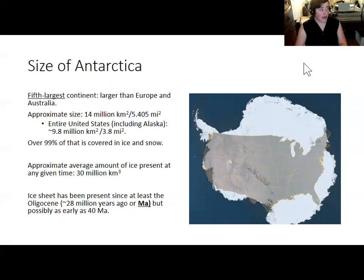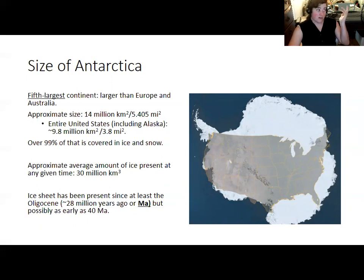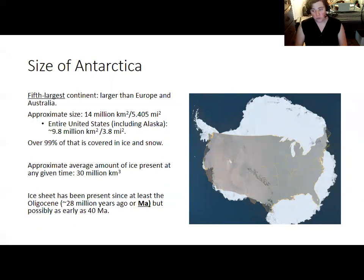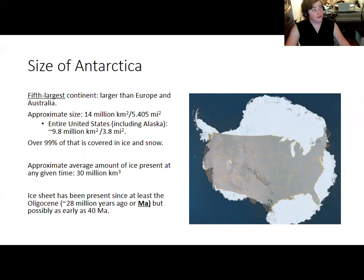Antarctica is basically a continent the size of the United States with no forests, no grasslands, no wildlife for the most part, and no people. It is a vast, empty world of ice. Millions of square kilometers of ice are present at any given time. The ice sheets are remarkably old and stable — they have been covering the continent for at least 25 million years, and it's believed they started forming earlier, around when the circumpolar current first formed.